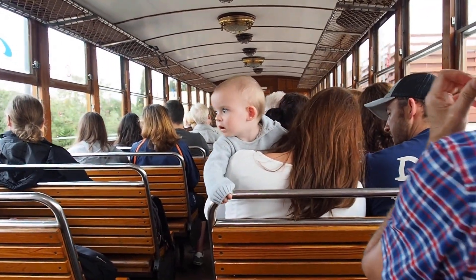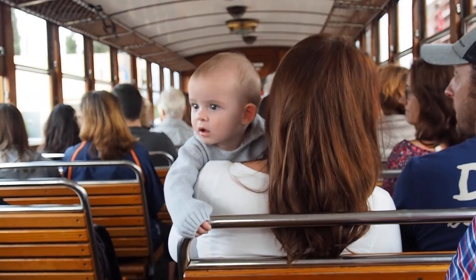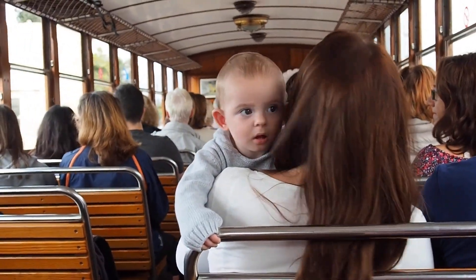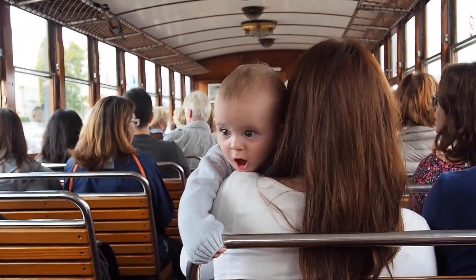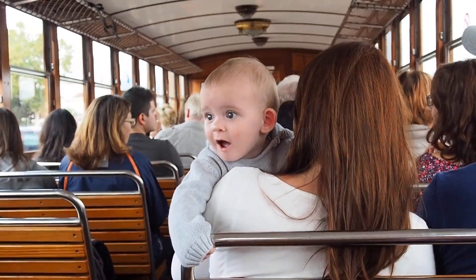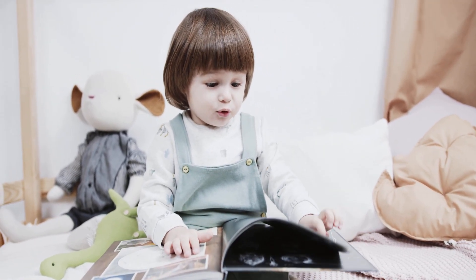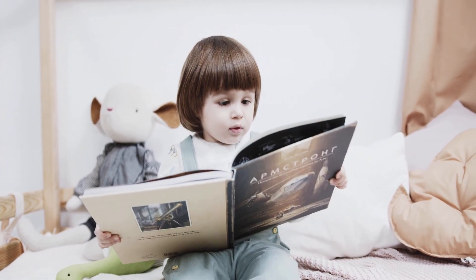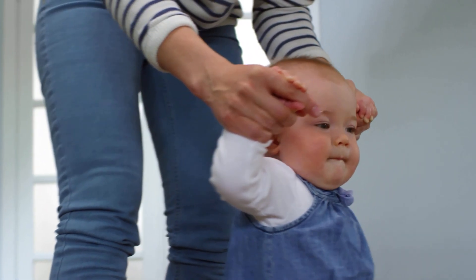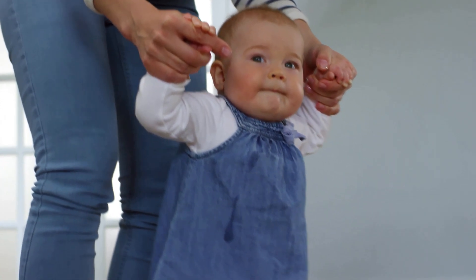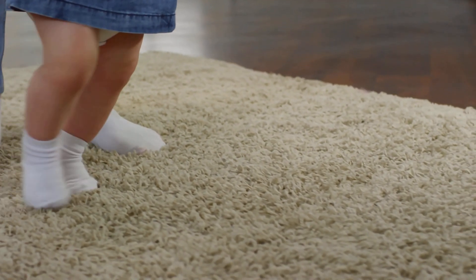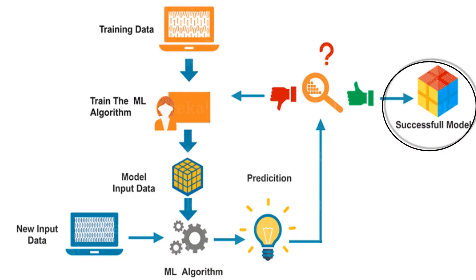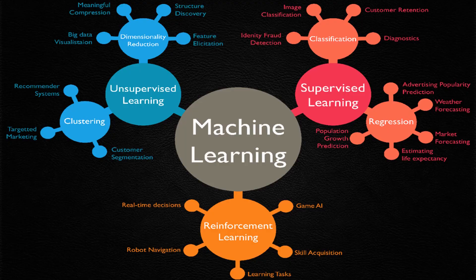Whenever we look at an object for the first time, we try to understand that object. We look for its features — the shape, color, area, surface — and try to gain as many features as we can. In the future, whenever we see a similar object, we're able to recognize it. Same way in machine learning, the algorithm looks at the data, a predictive model is created, and this model can give you future predictions when given new data.